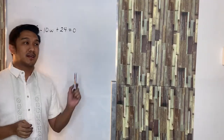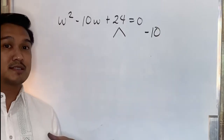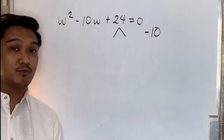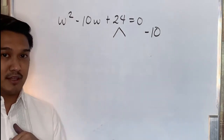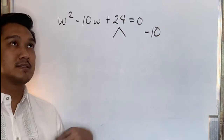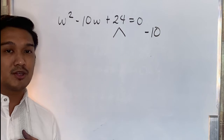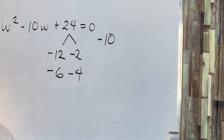Now, let's consider the next quadratic equation. The first thing that we need to do is factor out the last term so that the sum will be the coefficient of the linear term. Since the constant term of the quadratic equation is positive, therefore the sign of the two factors is either both positive or both negative. Since the sign of the middle term is negative, therefore the factors are both negative. The factors could be negative 12 and negative 2, or negative 6 and negative 4.